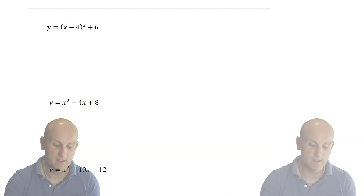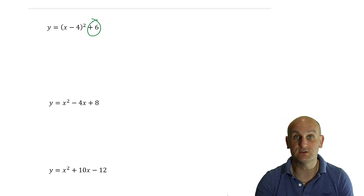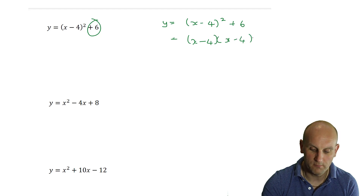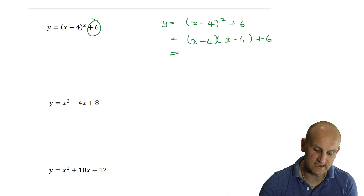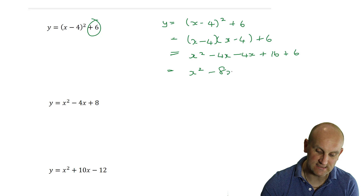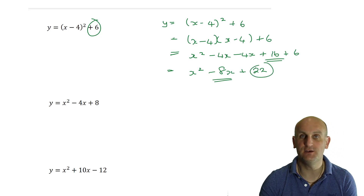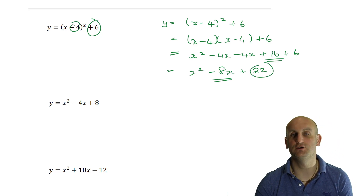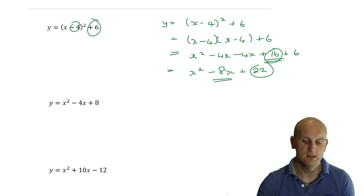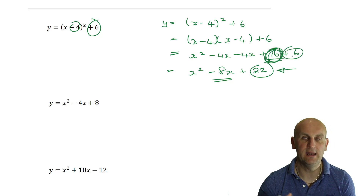That number on the end is going to become quite useful to us. Now, all the ones we had before didn't have a number on the end, but this one does. y equals x minus 4 squared plus 6, which is x minus 4 times x minus 4 plus 6. Multiplying up the brackets gives me x squared minus 4x minus 4x plus 16, and then adding another 6 gives me x squared minus 8x plus 22. This number outside here and 22 don't have a direct relationship, but we did notice that 16 came from squaring, and to get to 22, I took that square number and added 6.